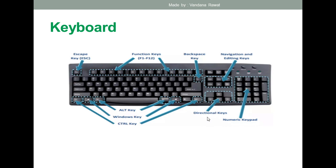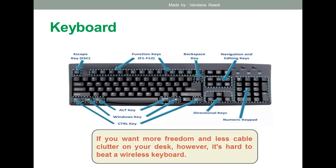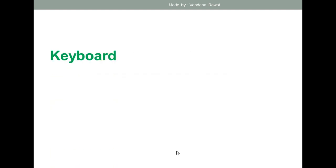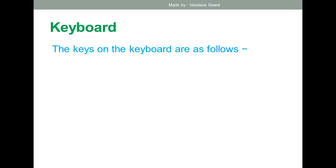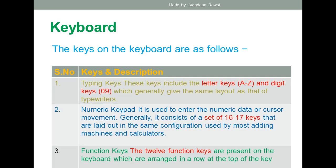That is basically the structure of the keyboard. If you want to purchase a wireless keyboard, it is also available in the market — you can buy a keyboard without a wire. Now, the types of keys on the keyboard: the first type is the typing keys, which include the letter keys from A to Z and the digit keys from 0 to 9.